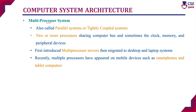Next is multiprocessor system. This multiprocessor system is otherwise called parallel systems or tightly coupled system. As the name implies, these multiple processor systems will consist of many processors in a single computer system. Here two or more processors share the computer bus and sometimes the clock, memory, and even peripheral devices. Initially they introduced multiprocessor servers only, then it migrated to desktop and laptop systems. Recently multiprocessor systems have appeared on even mobile devices like smartphones and tablet computers. Since it consists of many processors, we can execute many tasks at a time, assigning individual tasks to each CPU.